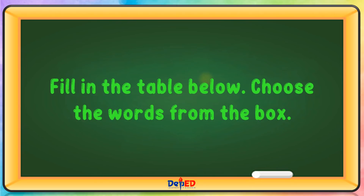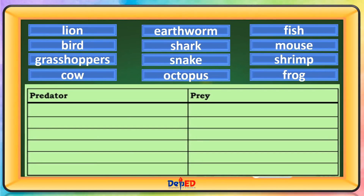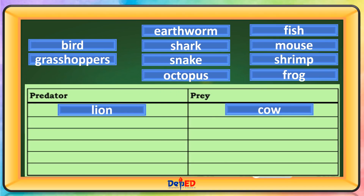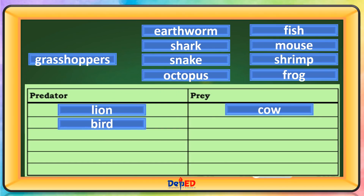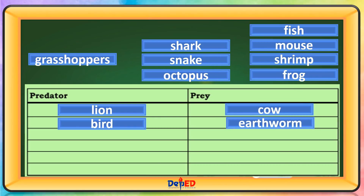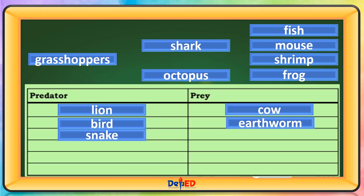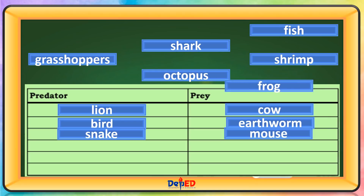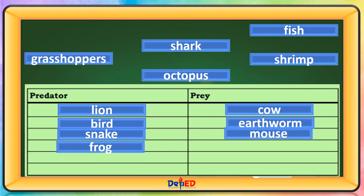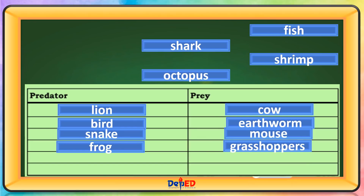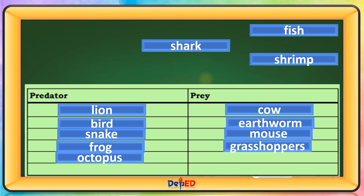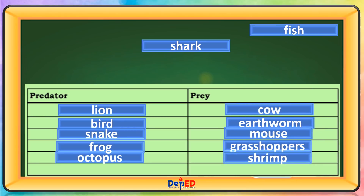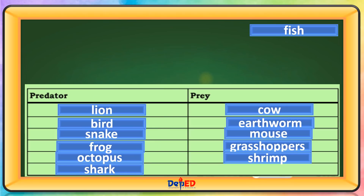Additional predator and prey examples include: cow as prey; bird as predator, earthworm as prey; snake as predator, mouse as prey; grasshoppers as prey; octopus as predator, shrimp as prey; shark as predator, and fish as prey.